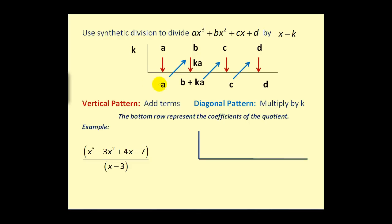Let's give it a try. The first step is to identify the coefficients of the dividend: one, negative three, positive four, and negative seven. Next we need to identify the value of k in the form of x minus k. Since we're dividing by x minus three, the value of k would be positive three.